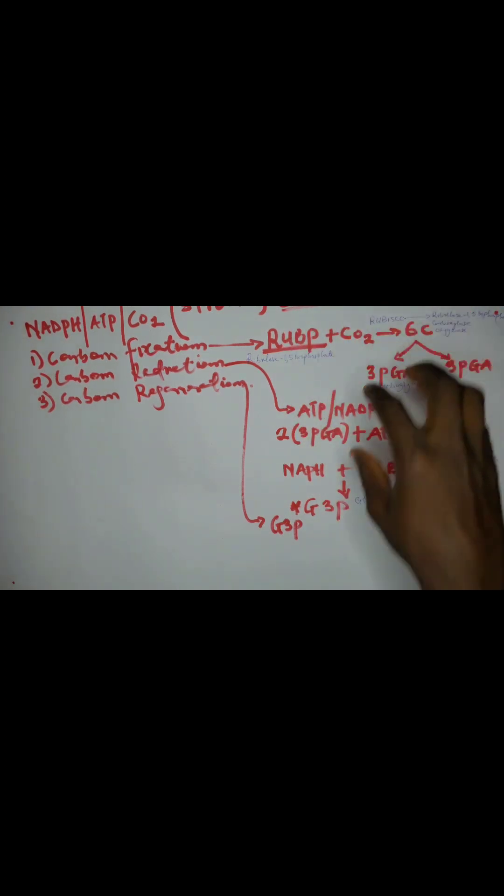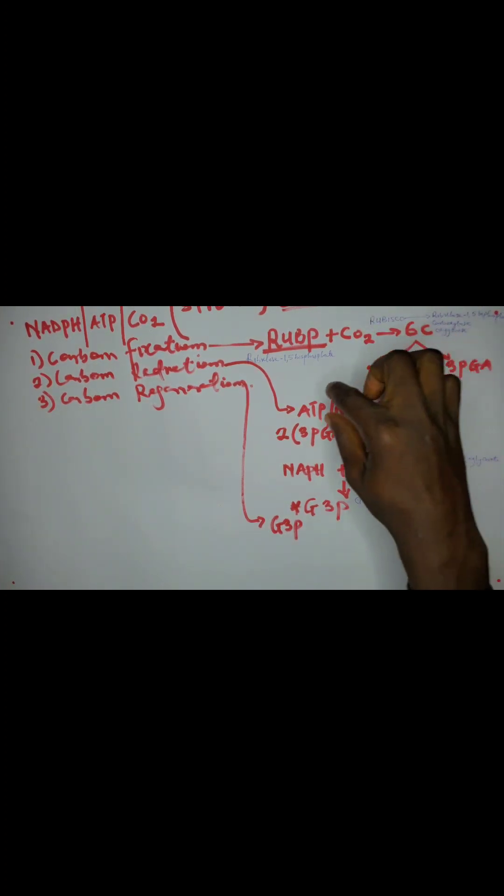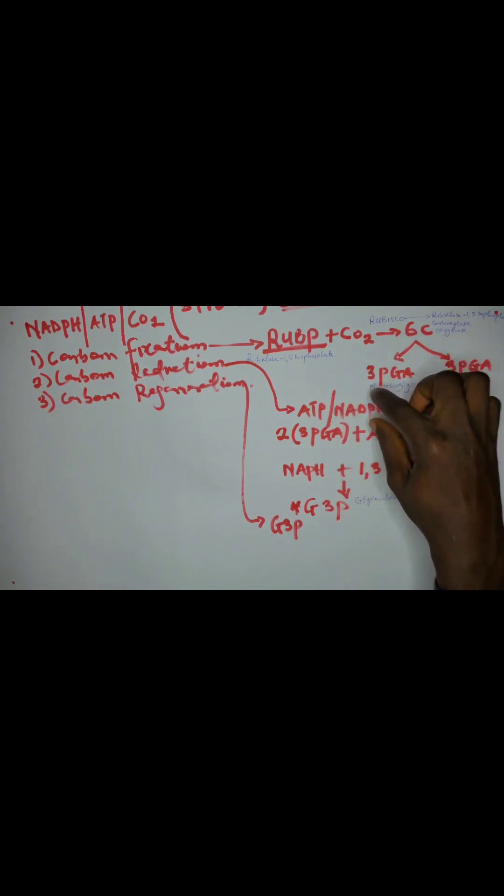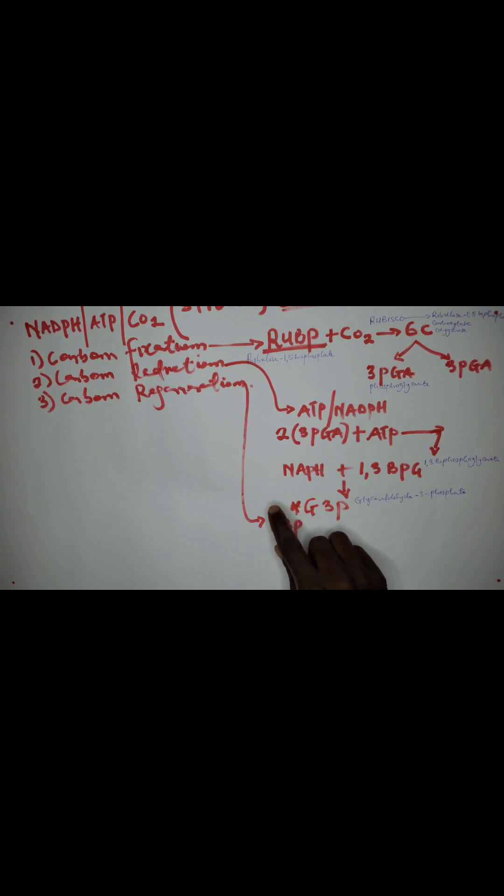In the next video, we will bring out a summary of the full cycle, which includes all these reactions. It will summarize everything in one cycle diagram and explain the number of CO2 molecules that come in, the number of ATP and NADPH utilized, the number of G3P produced, how many G3P molecules regenerate RuBP, and how many form glucose.